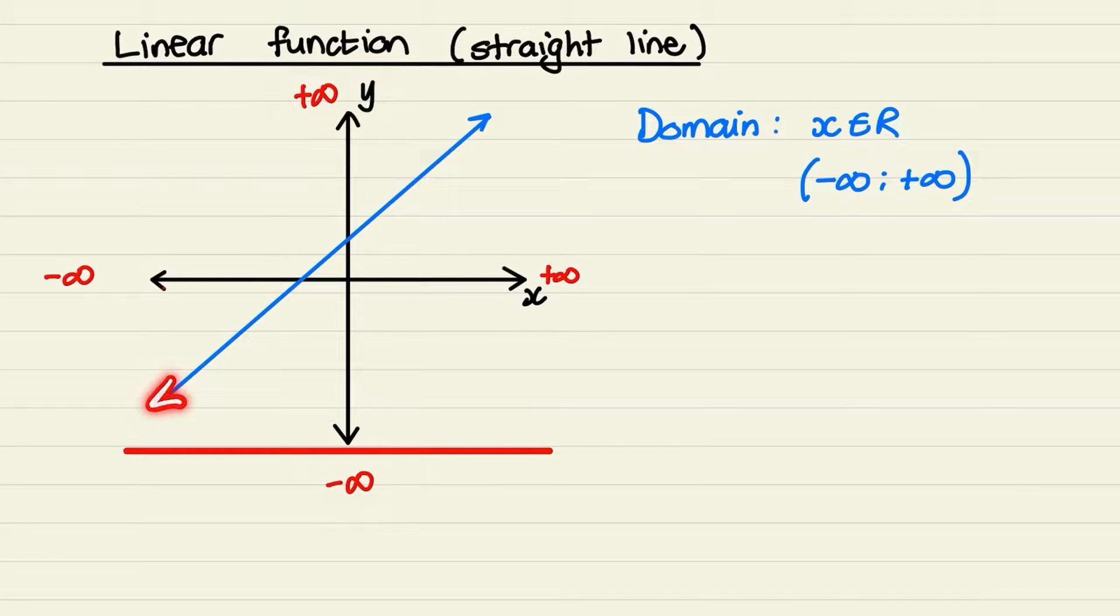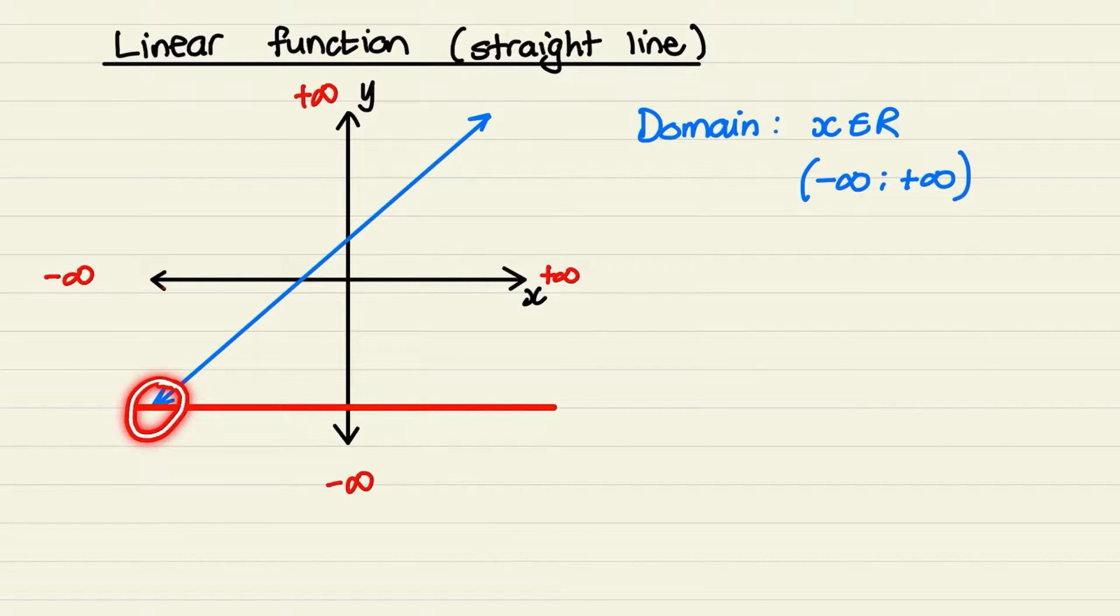Now remember these arrows mean that this line continues indefinitely or forever towards the left and towards the right. So if I start from negative infinity on the y-axis and I move a line all the way up, I can see that the straight line would exist at negative infinity.